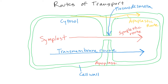The transmembrane route works because the substance is going through the cell wall and then through the plasma membrane, back through the plasma membrane, into the cell wall, and so on and so forth. So those are our three routes that substances can take as they pass through cells.